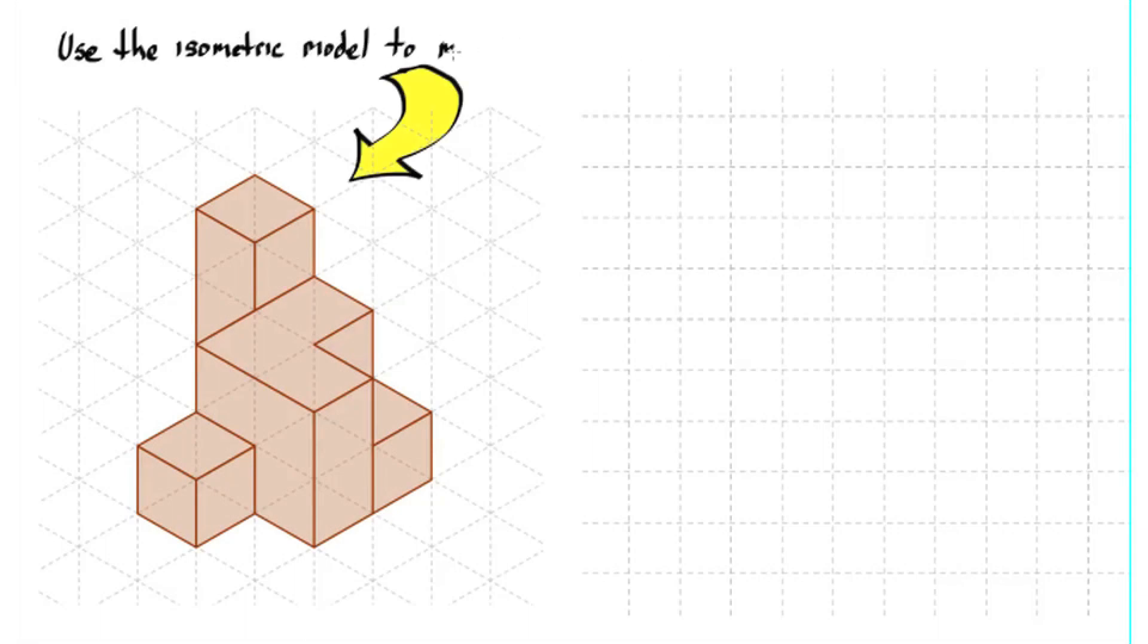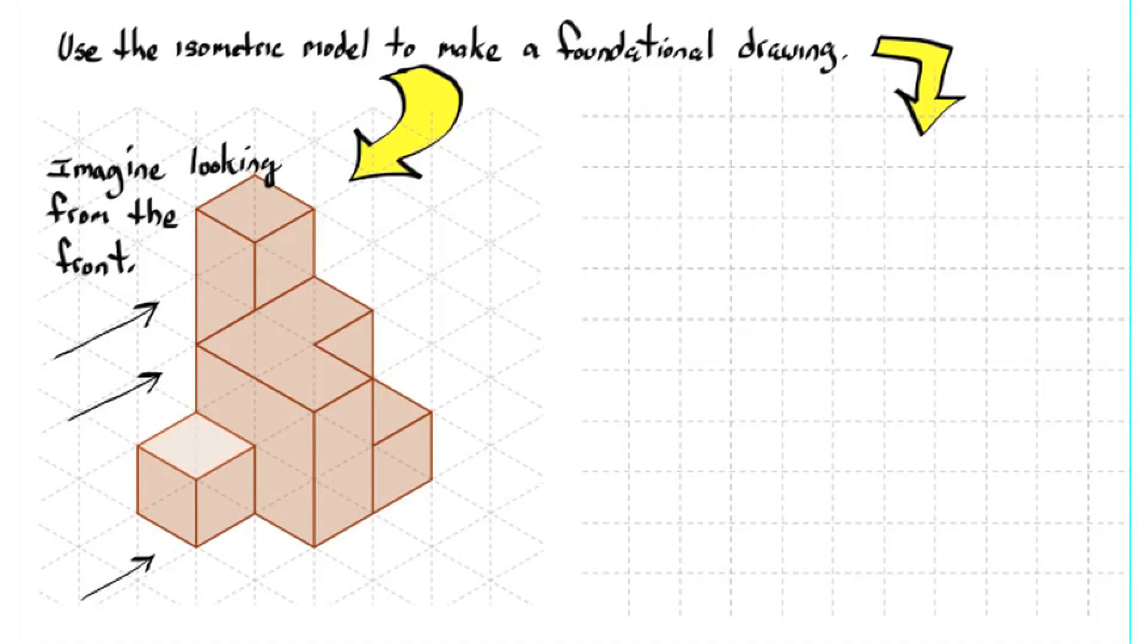Use the isometric model to make a foundational drawing. So imagine looking at this shape from the front side, and as we look down, what shapes do we see? We see a square, and then an L shape, another square, and then yet another square. Now we need to label the numbers on the height of each part. And that's the foundational drawing.